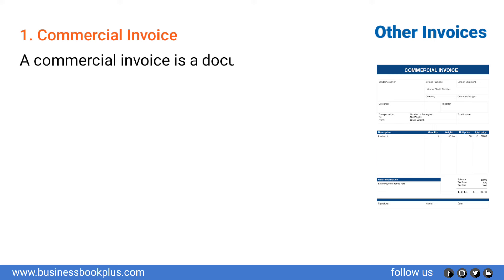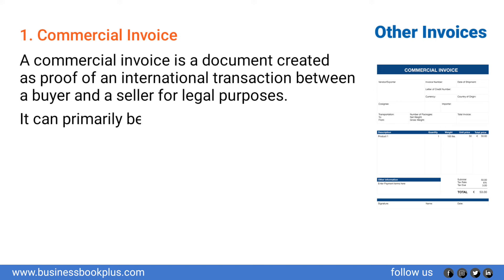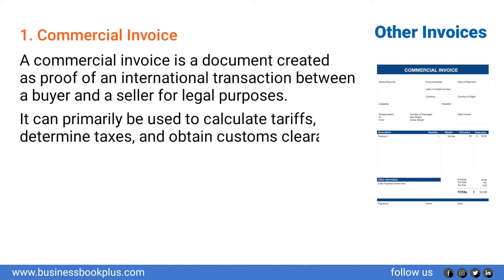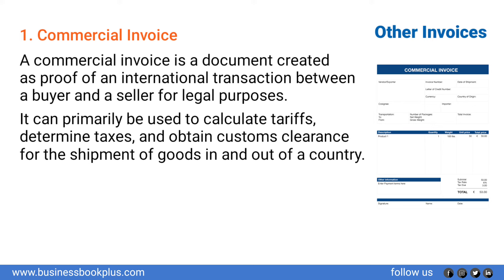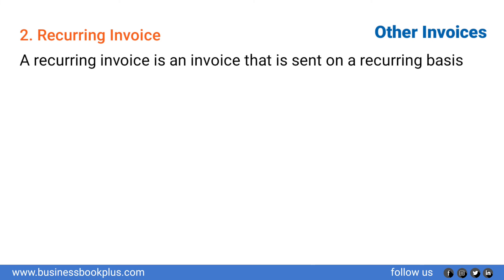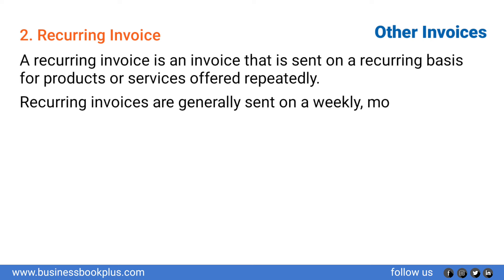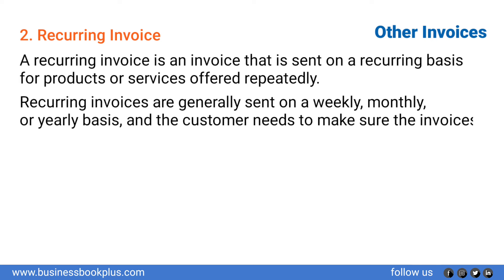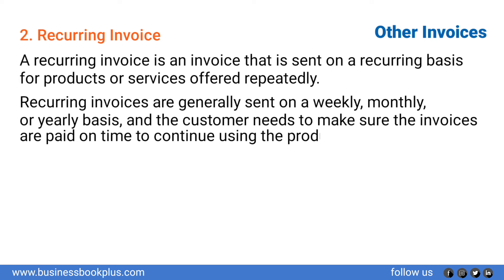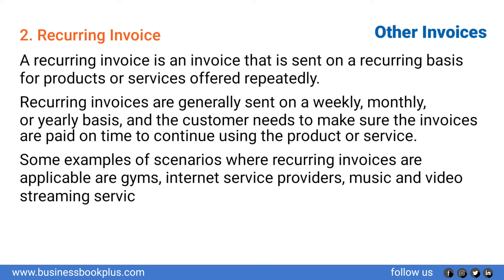Other invoices. Commercial invoice: a commercial invoice is a document created as proof of an international transaction between a buyer and a seller. It is primarily used to calculate tariffs, determine taxes, and obtain customs clearance for the shipment of goods in and out of a country. Recurring invoice: a recurring invoice is sent on a recurring basis for products or services offered repeatedly — generally weekly, monthly, or yearly. The customer must ensure invoices are paid on time to continue using the product or service. Examples include gyms, internet service providers, and other SaaS products.